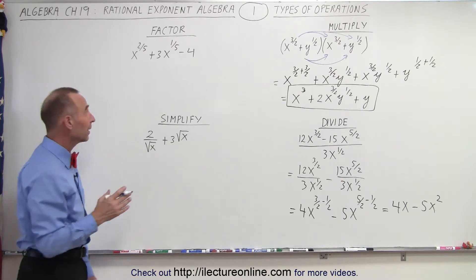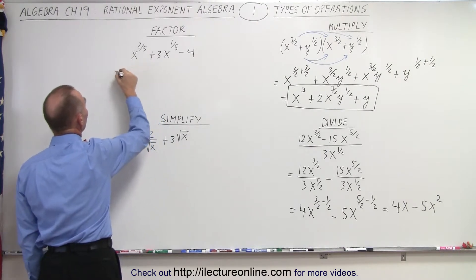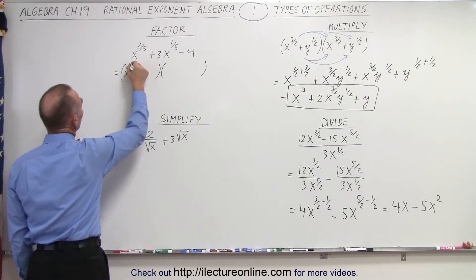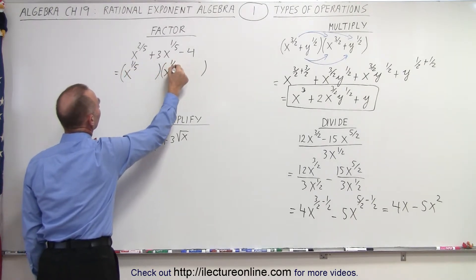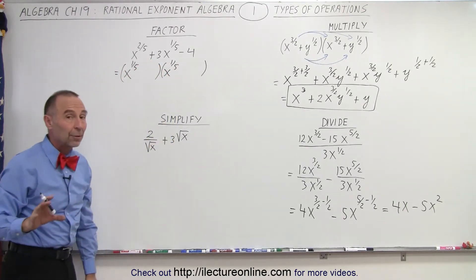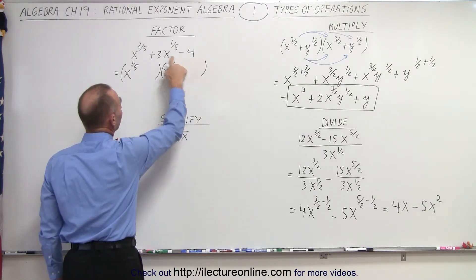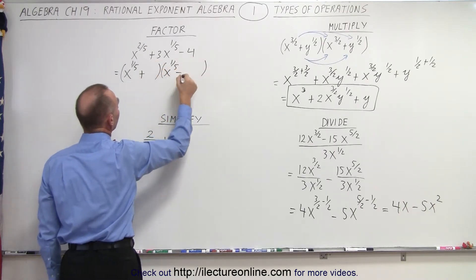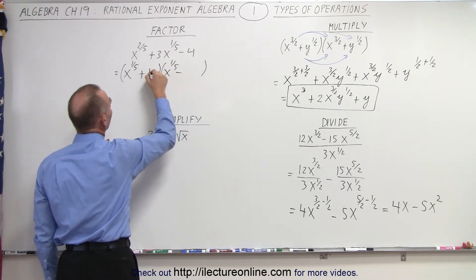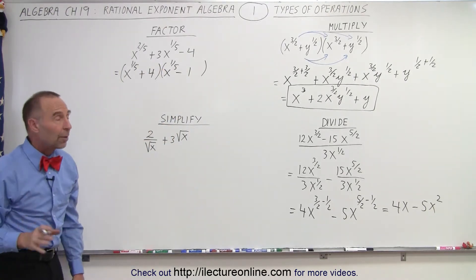When we need to factor, we have x to the 2 fifths plus 3x to the 1 fifth minus 4. If it's factorable, we can write it as the product of two binomials. We need x to the 1 fifth and x to the 1 fifth — notice when we multiply these together we add exponents and get 2 fifths back. On the end we have minus 4 and plus 3, which means we need a plus and a minus. When we add them we get plus 3; when we multiply we get minus 4. So plus 4 and minus 1: multiply gives minus 4, add gives plus 3. That is the proper way of factoring that.